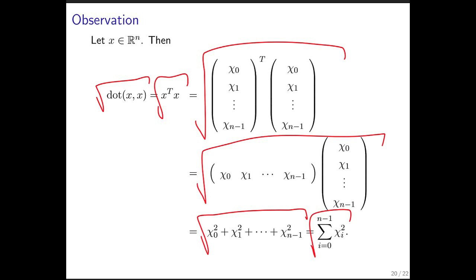What you notice is that this is the length of vector x. Therefore, the length of vector x is the square root of the dot product of x with itself.